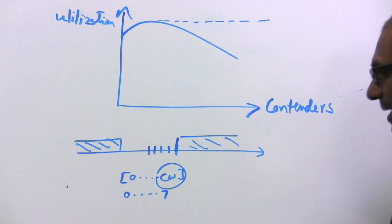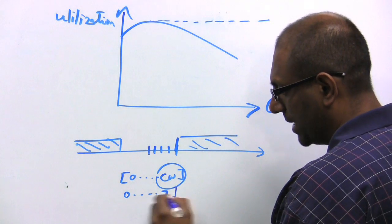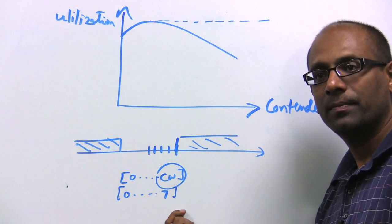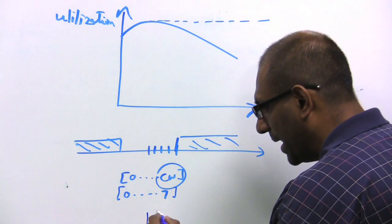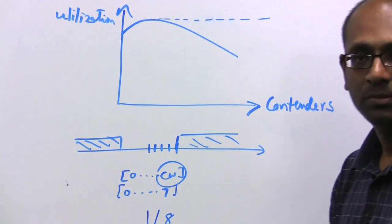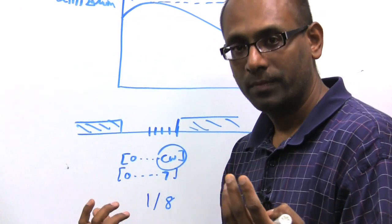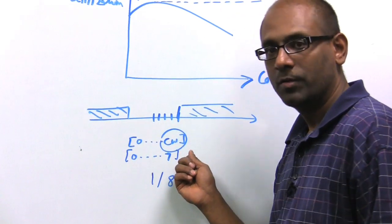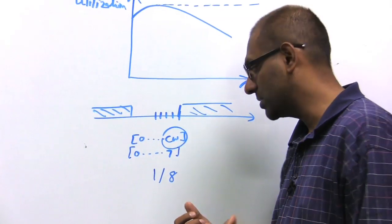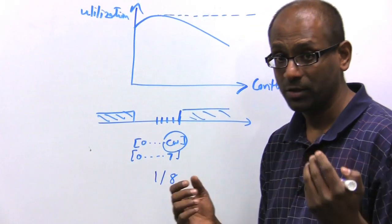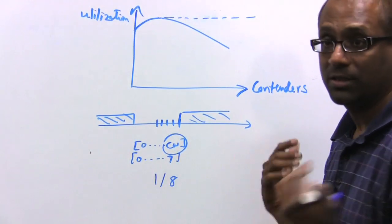As a specific example, if you have two contenders and they pick values between 0 and 7, notice each of them has up to 8 choices. In fact, there is a one-eighth probability of collision, because each device can choose up to 8 values, 0 through 7, which means there's a total of 64 combinations, any 8 of which will cause collision.